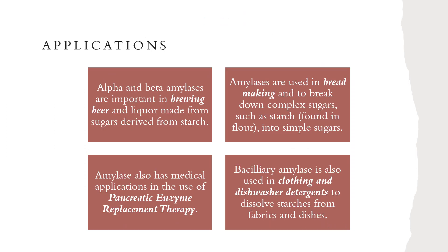The uses of amylase enzyme: Alpha and beta amylases are important in brewing beer and liquids made from sugars derived from starch. Amylases are used in bread making to break down complex sugars such as starch into simple sugars. Amylase also has medical applications in pancreatic enzyme replacement therapy. Amylase is also used in laundry and dishwasher detergents to remove starches from fabrics and dishes.